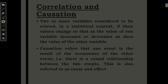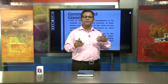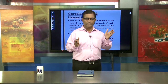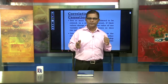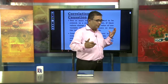Two or more variables are considered to be related in a statistical context if their values change so that as the value of one variable increases or decreases, so does the value of the other variable. When two variables move in opposite directions, we know that is negative correlation. But what about the cause?